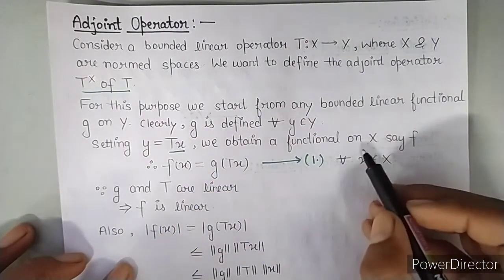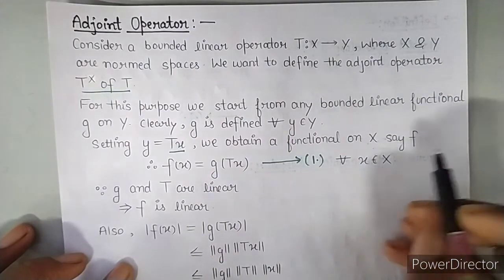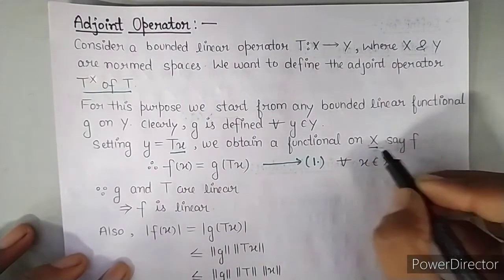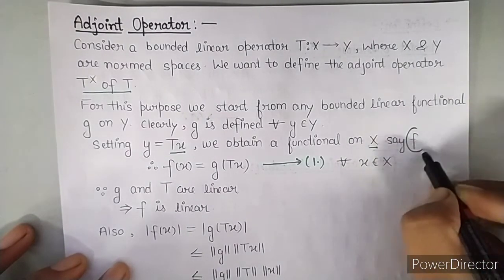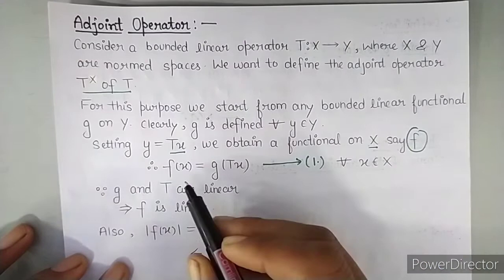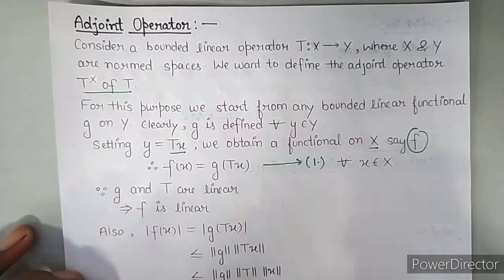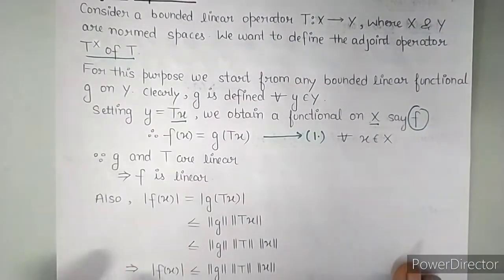Then we obtain a functional on X say F. If we set Y to TX, then we get a functional on X. We gave it the name F. And let's say F of X equals G of TX for all X belonging to X. We gave this the name equation number 1.